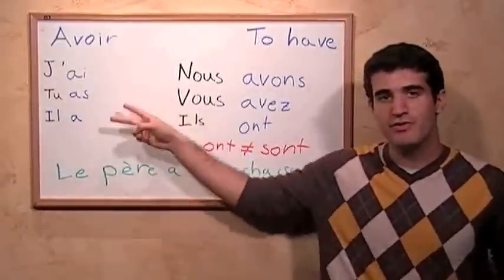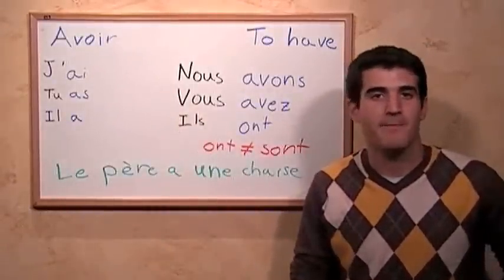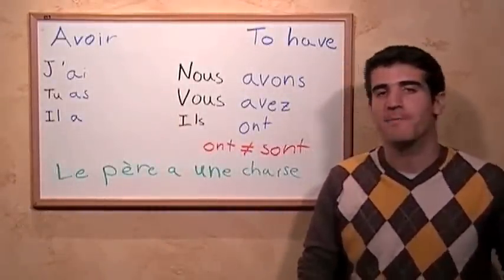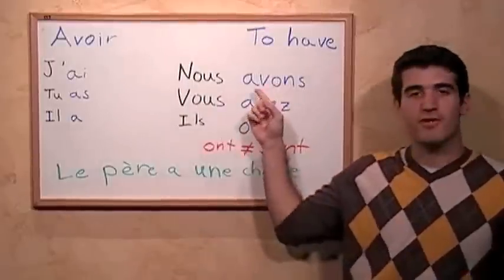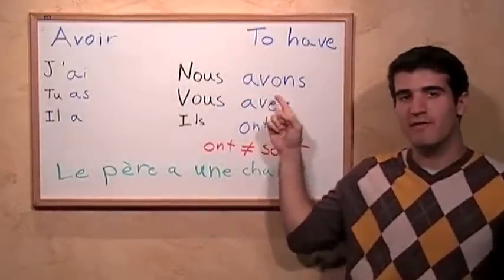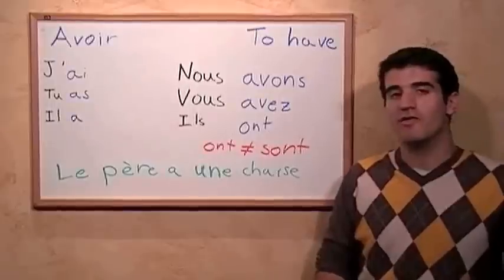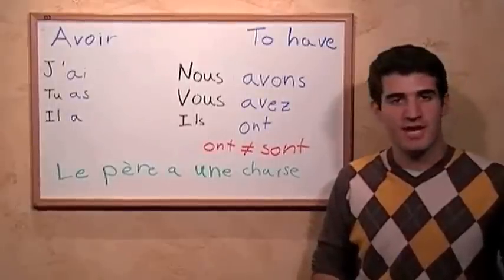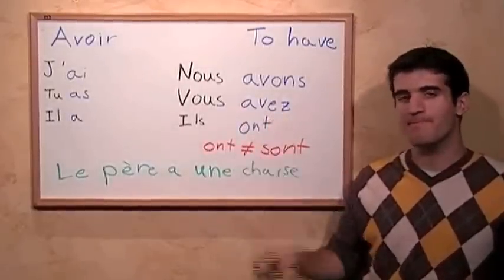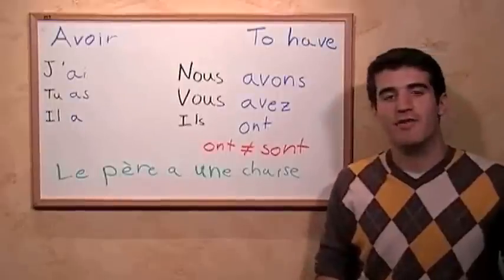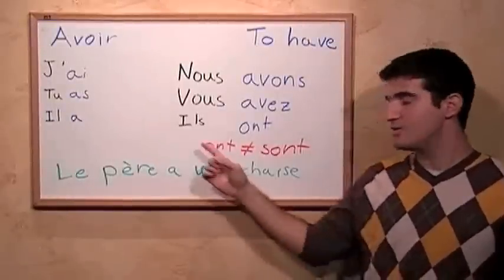These two, although spelled differently, are pronounced exactly the same: a. For the first person plural, we have nous avons. For the second person plural, we have vous avez. And for the third person plural, we have ils ont.